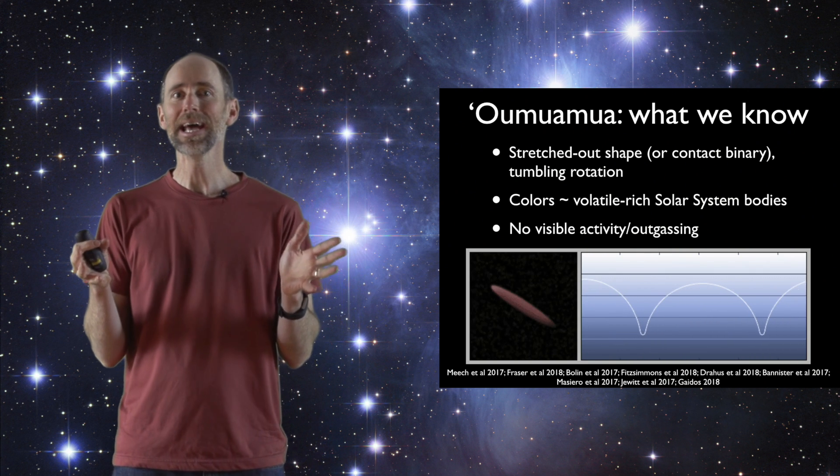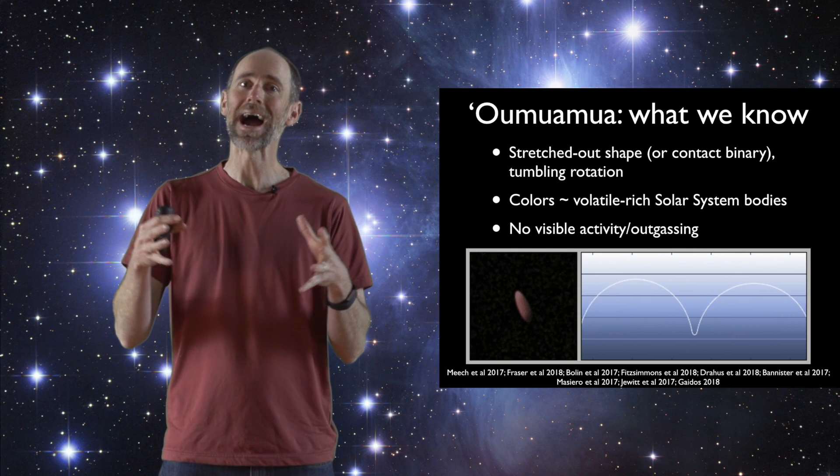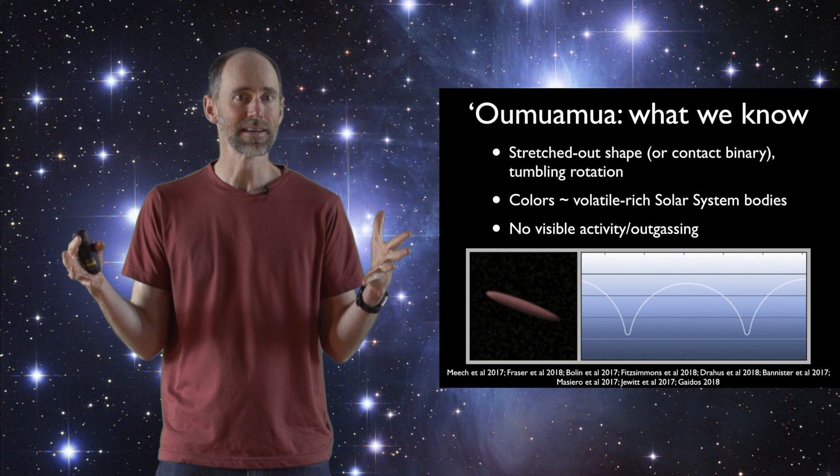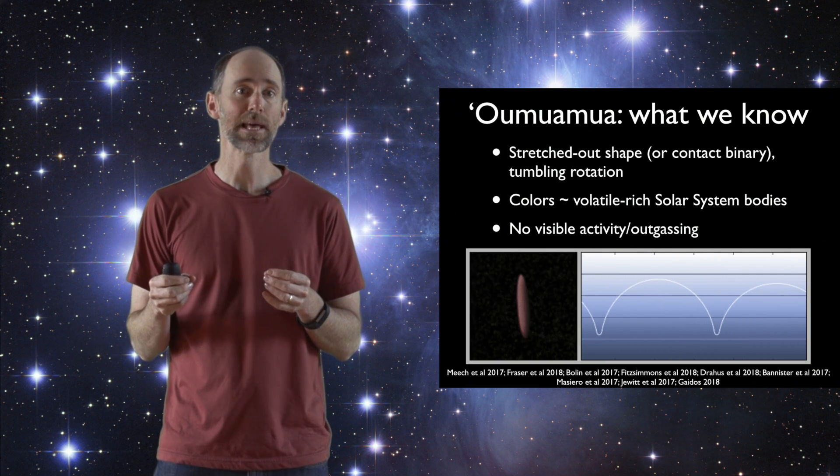But it didn't behave like a comet when it passed close to the sun. It passed very close, but there was no visible outgassing or activity. So it didn't create a coma, it didn't have any tails like comets do when they pass close to the sun.